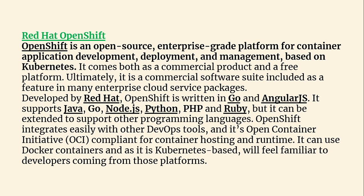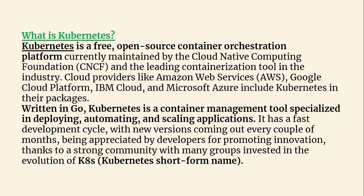Red Hat OpenShift is an open source enterprise platform for container application development, deployment, and management based on Kubernetes. It comes both as a commercial product and a free platform, and is included as a feature in many enterprise cloud service packages. OpenShift is written in Go and AngularJS and supports Java, Go, Node.js, Python, PHP, and Ruby, with the ability to extend to other languages. It integrates easily with DevOps tools and is OCI-compliant, supporting Docker containers.